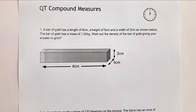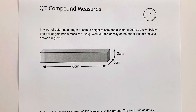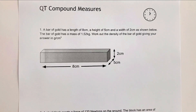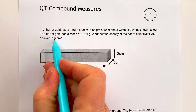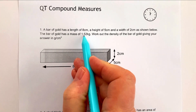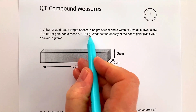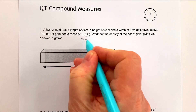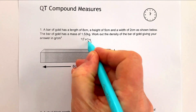Okay, question number one — please do stop the video, have a go, and compare your solution. We're being asked to work out the density of a bar of gold. An important thing here is the answer needs to be in grams per centimeter cubed, but the mass has been given in kilograms, so immediately we need to change that to grams.